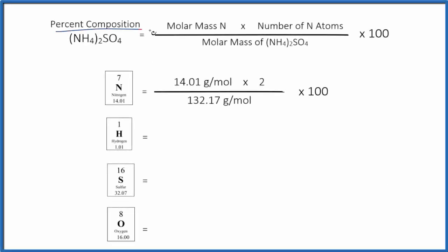Let's calculate the percent composition by mass for each element here in NH42SO4. That's ammonium sulfate. So we'll start out with the nitrogen atom.